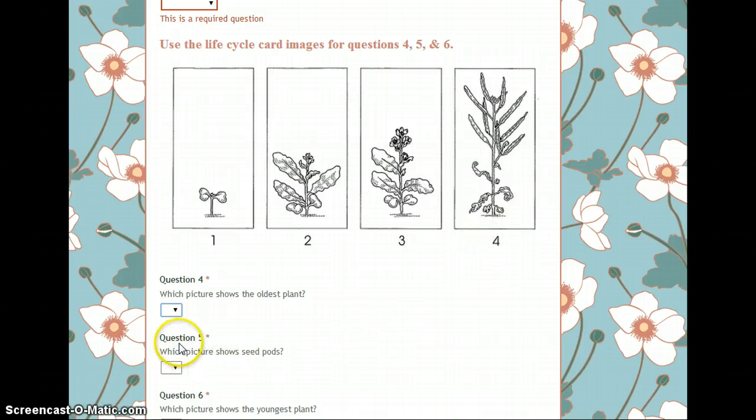Question 5. Which picture shows seed pods? Choose your dropdown box and select either plant 1, 2, 3, or 4. Again, which picture shows seed pods? Picture 1, 2, 3, or 4.